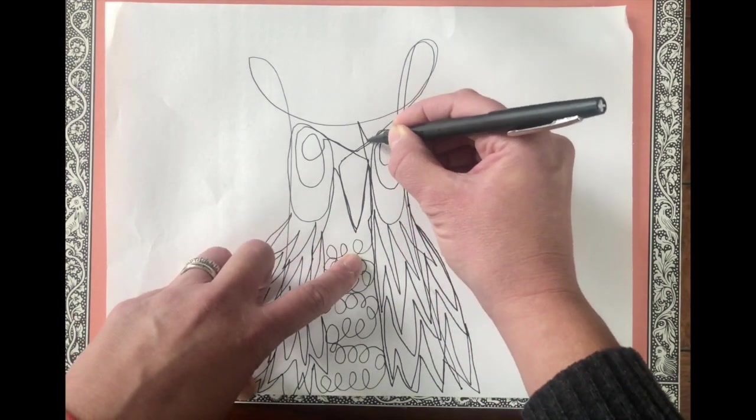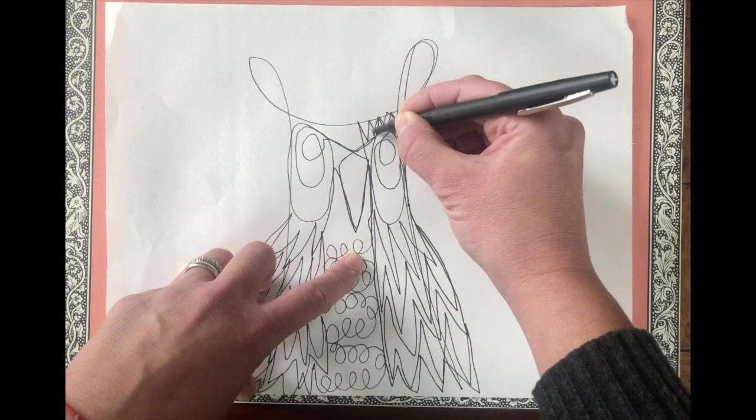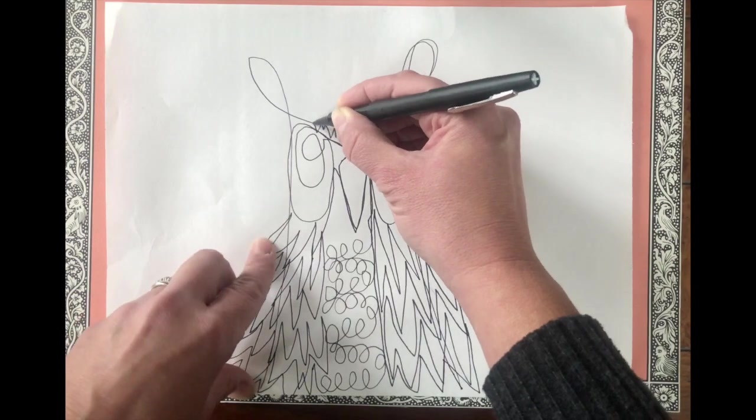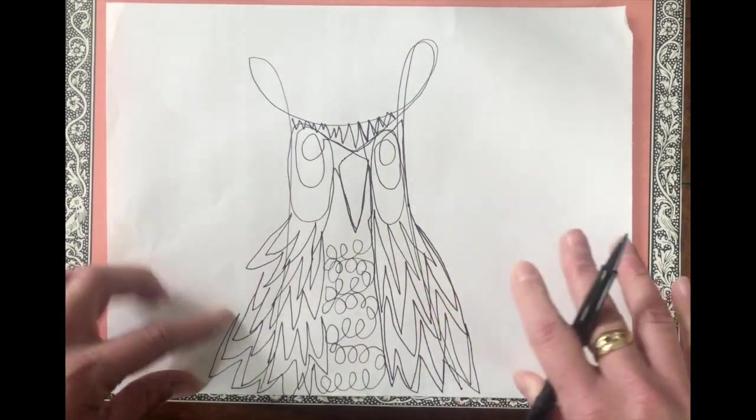I'm going to go back up and then recreate those zigzags on the top of his head for the feathers. So if I did like a curving line, I might do the same there. Okay. So there is my owl.